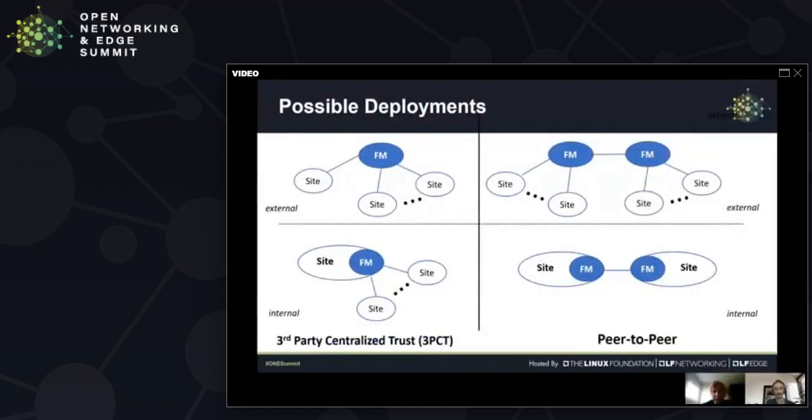Some of the possible deployments we have been investigating. On the left, you see a third-party centralized trust model. On the right, you see peer-to-peer cloud federations. On the left-hand side, the third-party trust model, each site is participating through a centralized federation manager and then becomes part of the federation that way. Whereas on the other side, the two sites are equivalent.